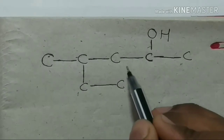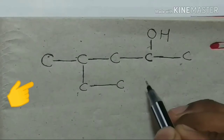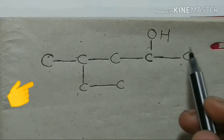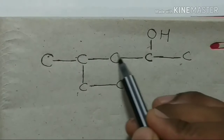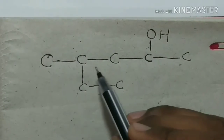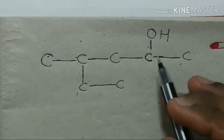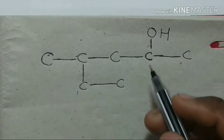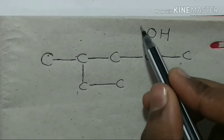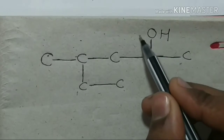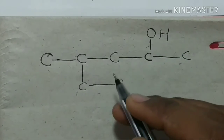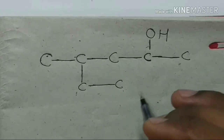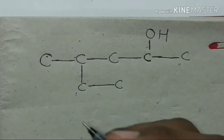First of all, we have to find the longest chain. The main functional group is the OH group. This gives us the secondary suffix. We should find the nearest numbering.